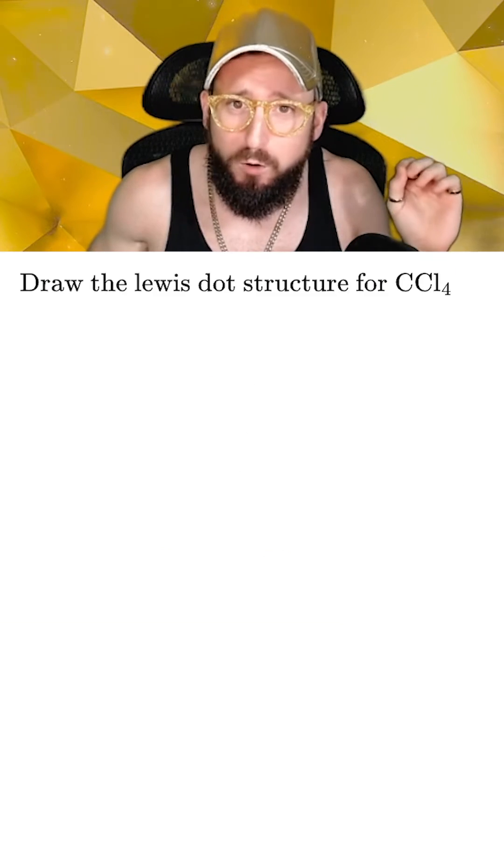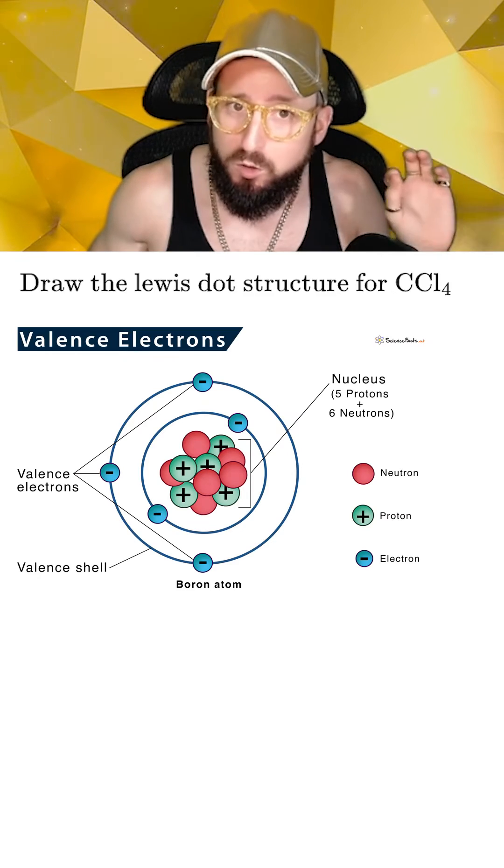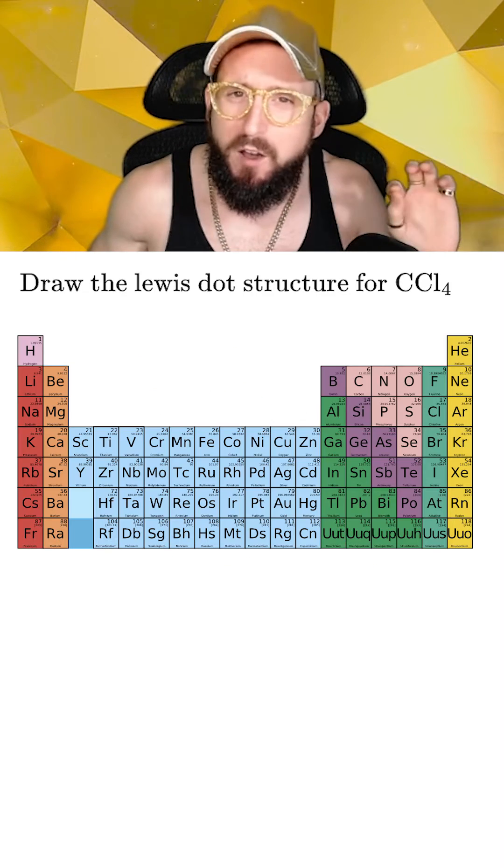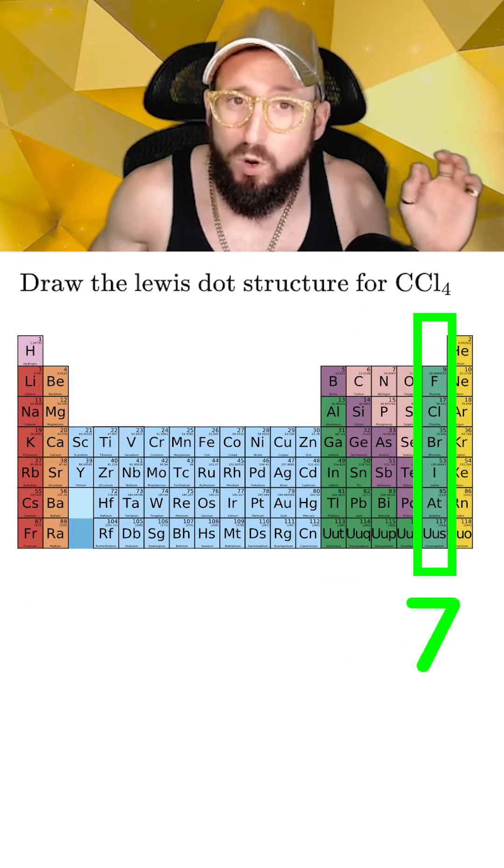But anyways, when you're given a chemical formula, the first step is to identify what the individual elements are, and then add up the total number of valence electrons. You can figure out how many valence electrons are in each element by looking at the periodic table and seeing which column it's in.